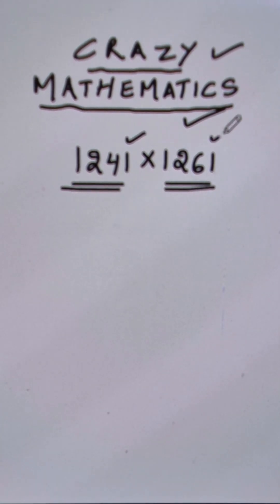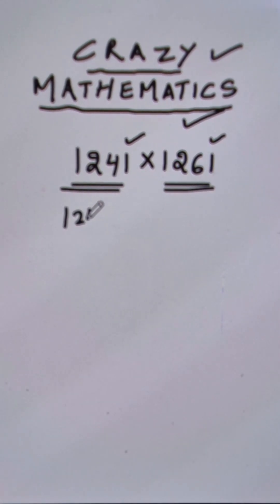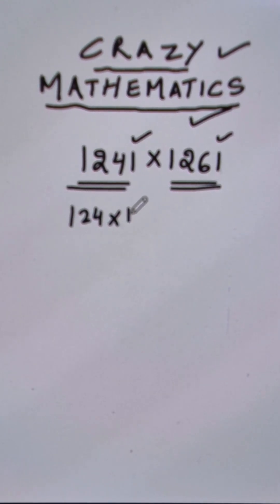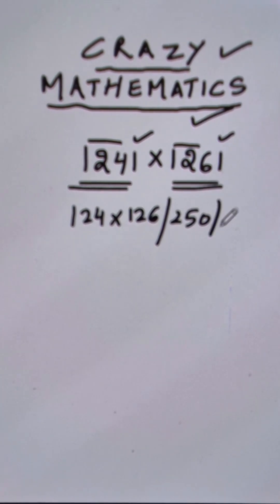The last digit in each number is 1, and therefore the remaining part, that is 124, is to be multiplied by 126 in the other number. Then you take the sum of these two parts, 124 and 126. They add up to 250, and finally you put a 1.